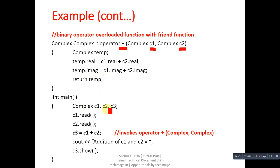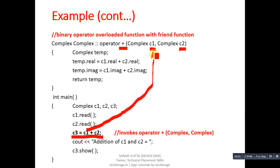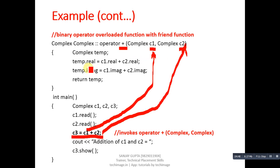Inside main, three objects c1, c2, and c3 are declared. c1.read() and c2.read() are called to read values. Then the overloaded plus operator is called with c1 and c2 passed explicitly, because plus is overloaded with friend so no object is passed implicitly. c1 and c2 add their values and store the result inside temp. Return temp assigns the result into c3, and c3.show() displays the result on the console.